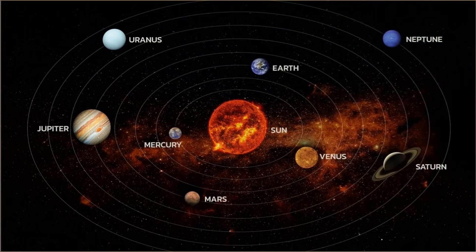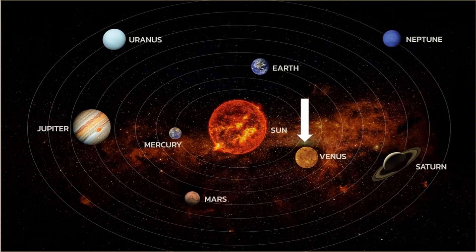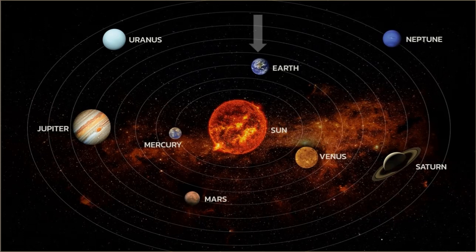Our planets. The first planet closest to the sun is Mercury. After that is Venus, also known as the evening star and the morning star, depending on the time of the year. The third planet is Earth — our planet, and it's the only planet we know of that contains life. The fourth planet is Mars, also known as the red planet.